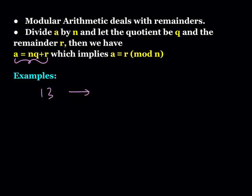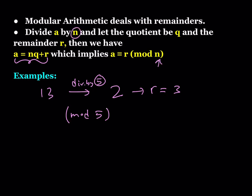Suppose you're dividing 13 by 5. When you divide by 5, the quotient is going to be 2 and the remainder is going to be 3. So in mod 5 — because we're dividing by 5 — when we divide 13 by 5 we're getting a remainder of 3 mod 5. When you divide by n, you're talking about mod n. The quotient doesn't really matter; what matters is the remainder.